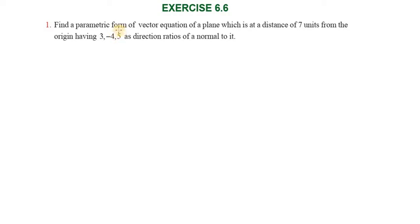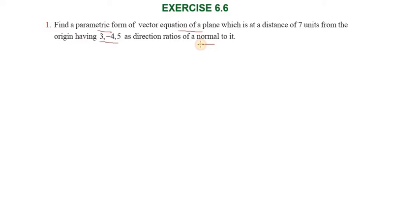Hi students, greetings from Success Education Academy. This is Exercise 6.6, Question number 1: Find the parametric form of vector equation of a plane which is at a distance of 7 units from the origin, having 3, minus 4, 5 as direction ratios of a normal to it.